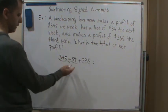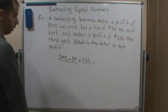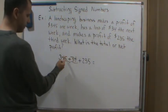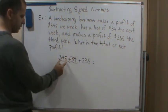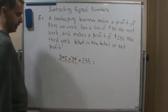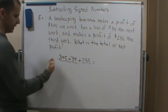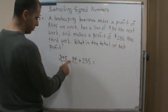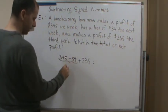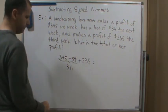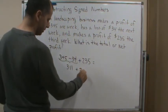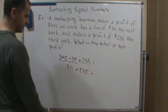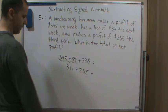That gives us 311. We can also write this as a plus negative — with opposite signs we take the absolute values, subtract, and keep the sign of the larger number. Either way we get 311. Now we have two positive numbers, so we add them and keep the sign: 311 plus 235 gives us 546.